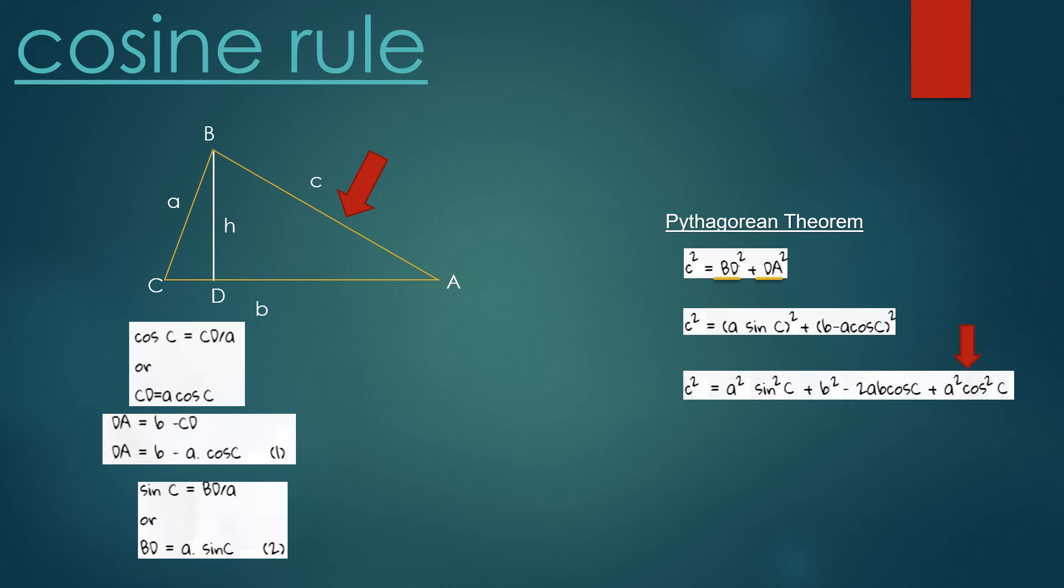Look at this sentence. We have a² as a common factor between the first term and the fourth term of the right-hand side of the equation. So we can write the equation as c² = a²(sin² C + cos² C) + b² - 2ab cos C.